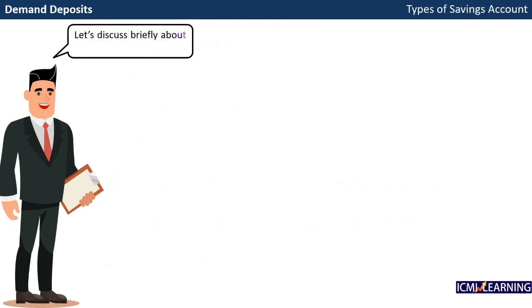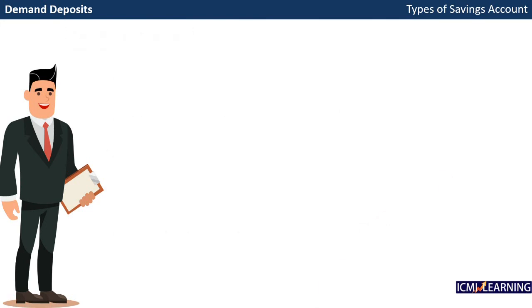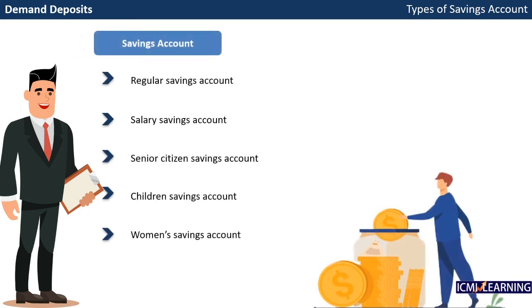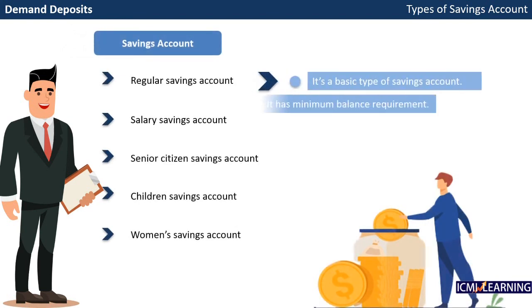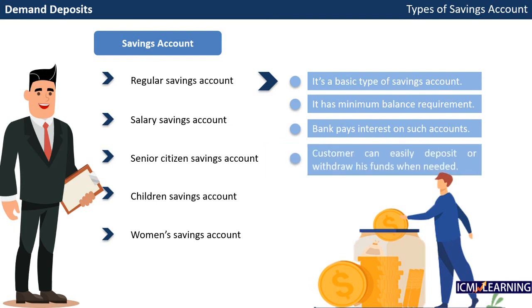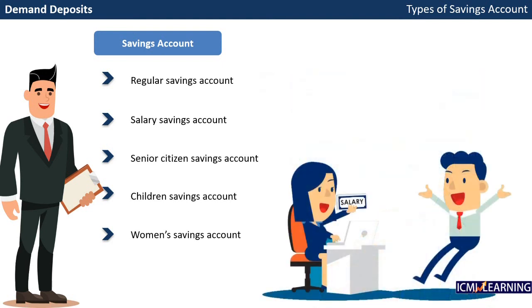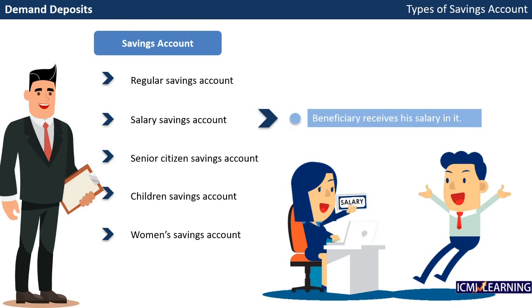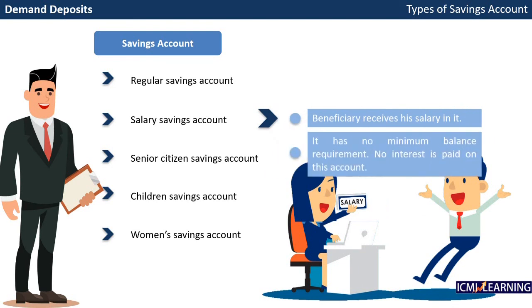Let's discuss briefly about savings accounts. The regular savings account is a basic type of savings account. It has a minimum balance requirement, and banks pay interest on such accounts. Customers can easily deposit or withdraw funds when needed. The salary savings account is one where the beneficiary receives his salary. It has no minimum balance requirement and no interest is paid on this account.